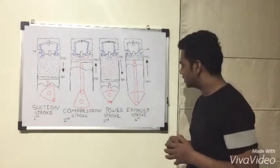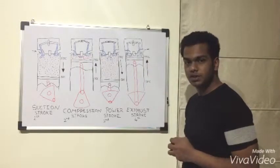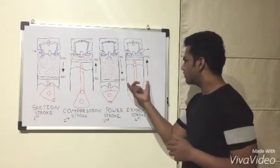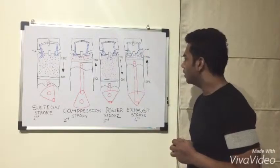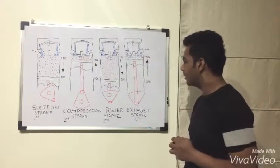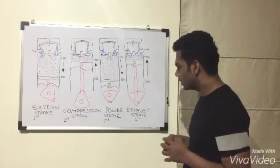Coming up towards the fourth stroke which is the exhaust stroke. During this stroke, the exhaust valve stays open and the piston travels from BDC towards the TDC and all the exhaust gases are being forcefully let out from the exhaust valve.